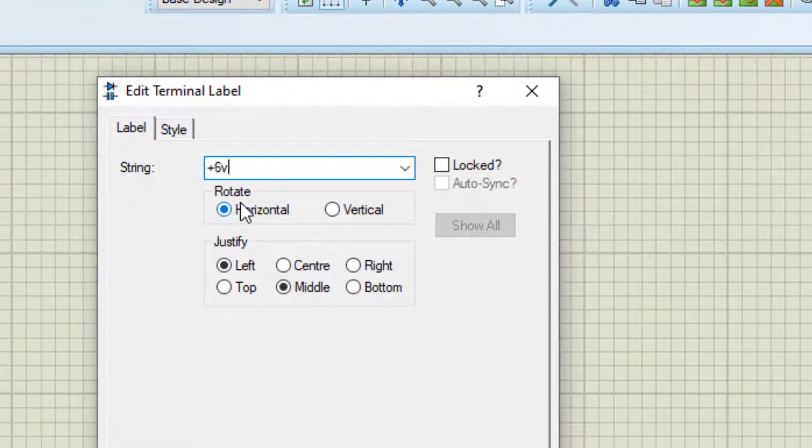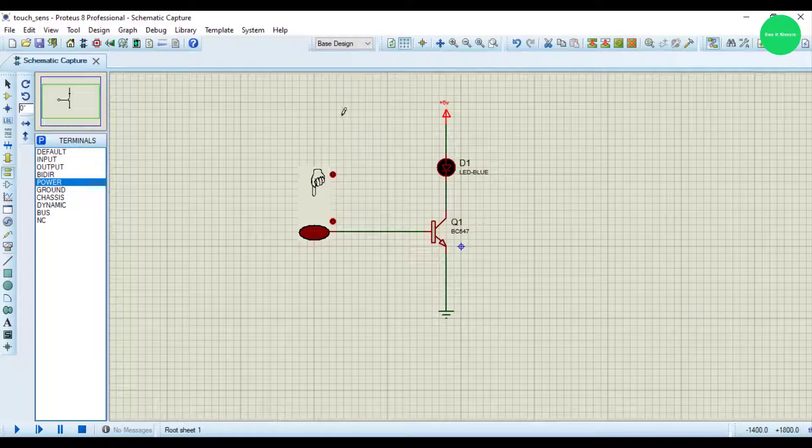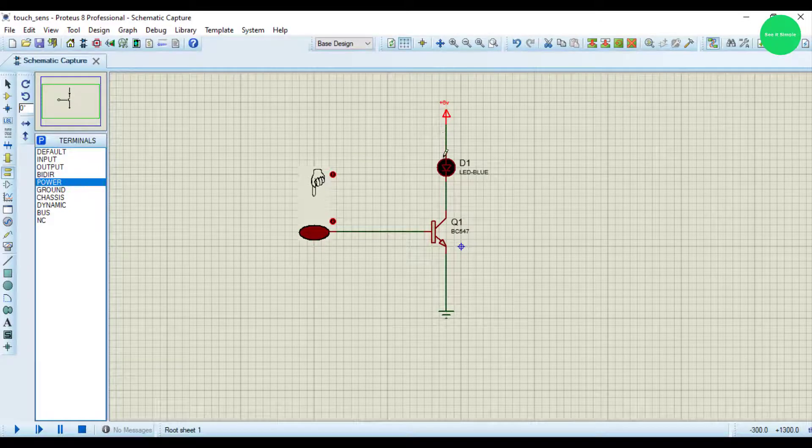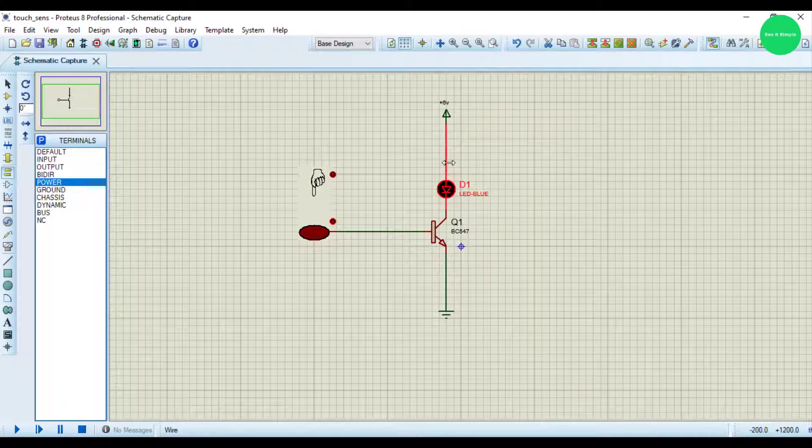Power. Plus 6V is enough. Now we need the resistor also, in between the power and the LED.